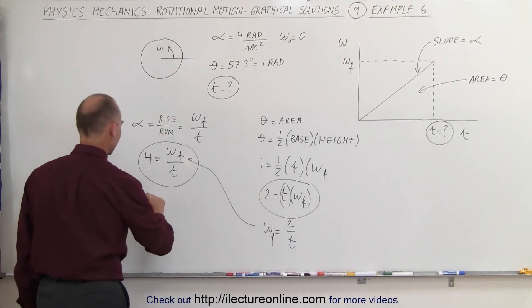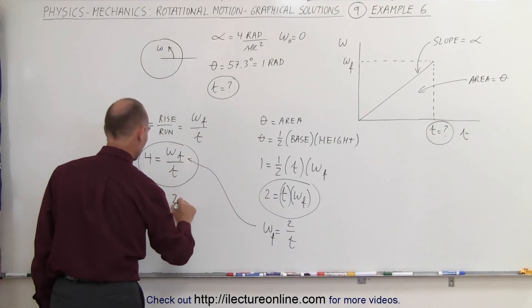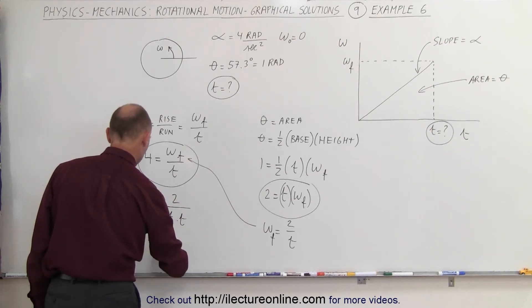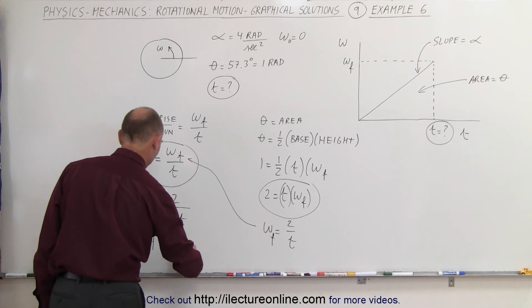When we do that, we get four is equal to omega final, which is two divided by time, times time, or four equals two divided by time squared.